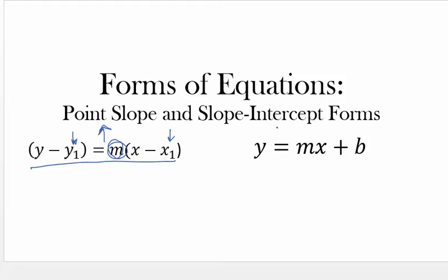The other form that you're familiar with is called the slope-intercept form. It's the y equals mx plus b form. And again, here is m and that's your slope. And if you recall, b is your y-intercept, which we have already talked about in class.